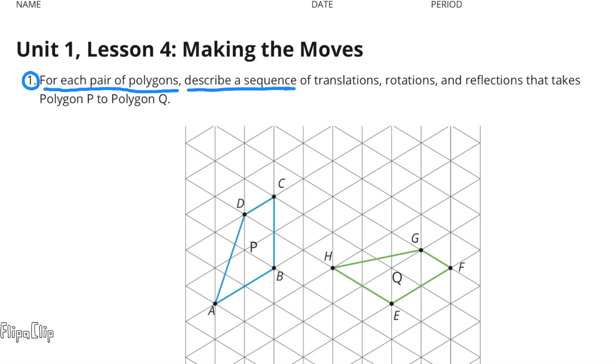Number 1. For each pair of polygons, describe the sequence of translations, rotations, and reflections that takes polygon P to polygon Q.